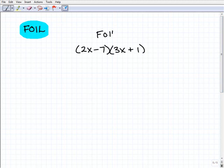So FOIL, first, outer, inner, and last. So the first is going to be 2x times 3x. So that would be 6x-squared. So that's my first. Now I'll do my outers. That's going to be 2x times 1, and that would be plus 2x.